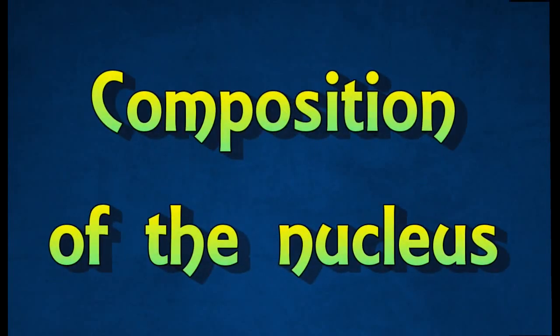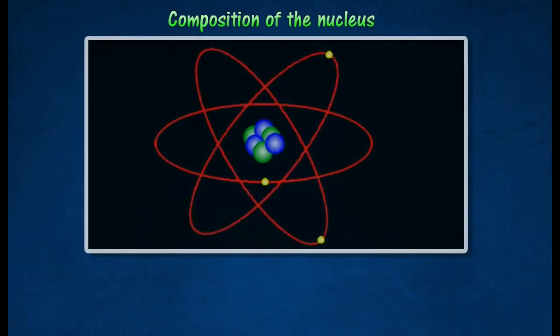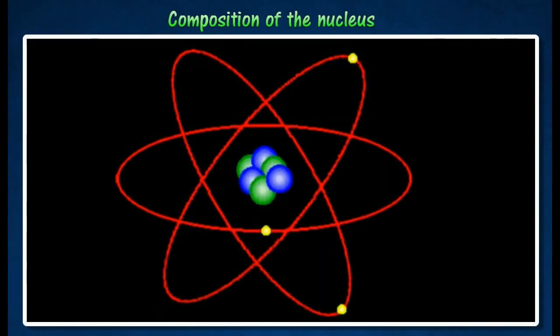Composition of the Nucleus. An atom contains three basic particles. A nucleus is made up of protons which are positively charged and neutrons which have no charge.